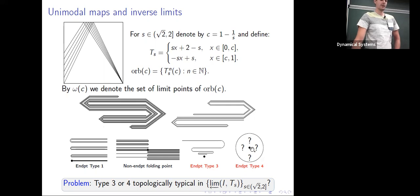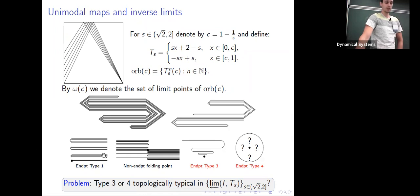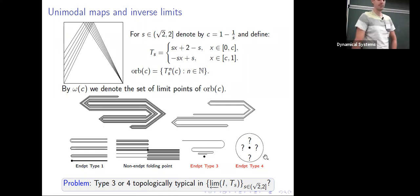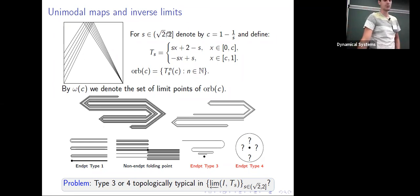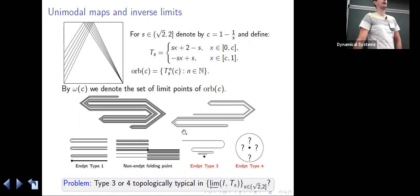One problem that is interesting to me: we could determine that type-three union type-four points are topologically typical in the whole family of tent inverse limit spaces for slopes between √2 and 2, but we couldn't determine which one of them is topologically typical — this is an interesting fine-topology question that is still open. This is mentioned in the first paper with Lori.